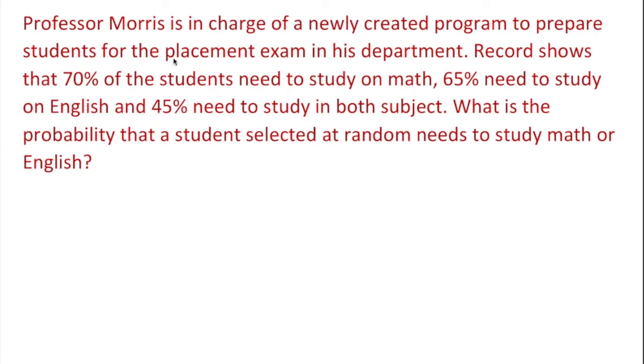We created a problem to prepare students for the placement exam in this department. Records show 70% of the students need to study math, 65% need to study English, and 45% need both subjects, math and English. What is the probability a student selected at random needs to study math or English?